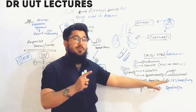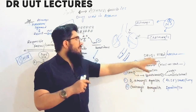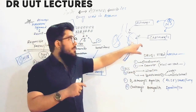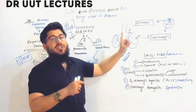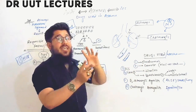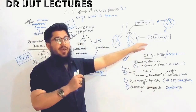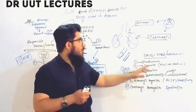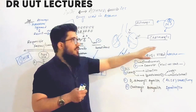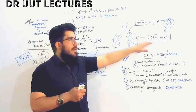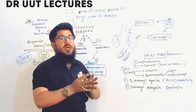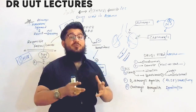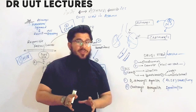Drugs like ipratropium and tiotropium are responsible for causing bronchodilation, because they are antagonists acting against the cholinergic supply. The cholinergic antagonists antagonize the function of the cholinergic supply, by means of which they cause bronchodilation — and that is exactly what we need.